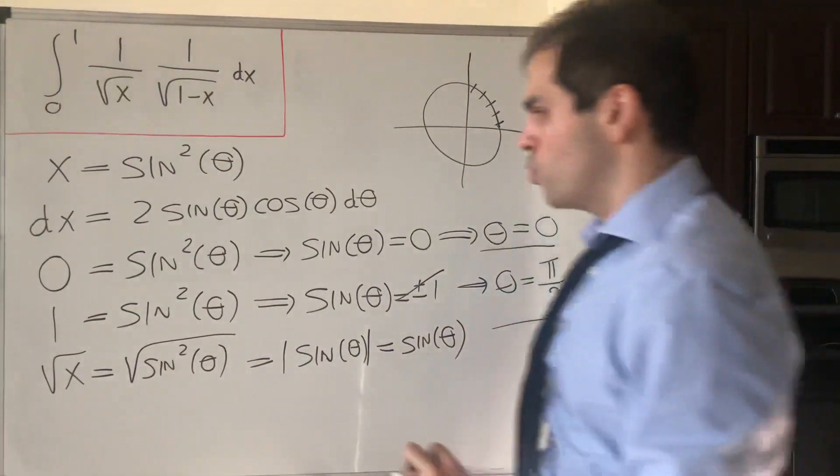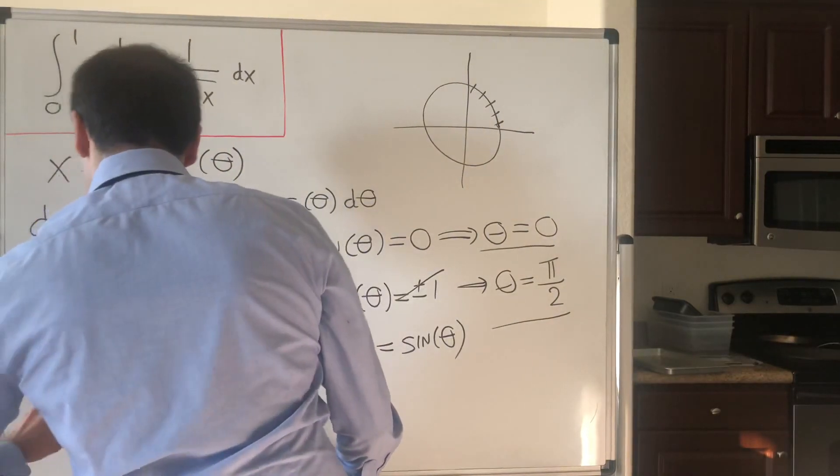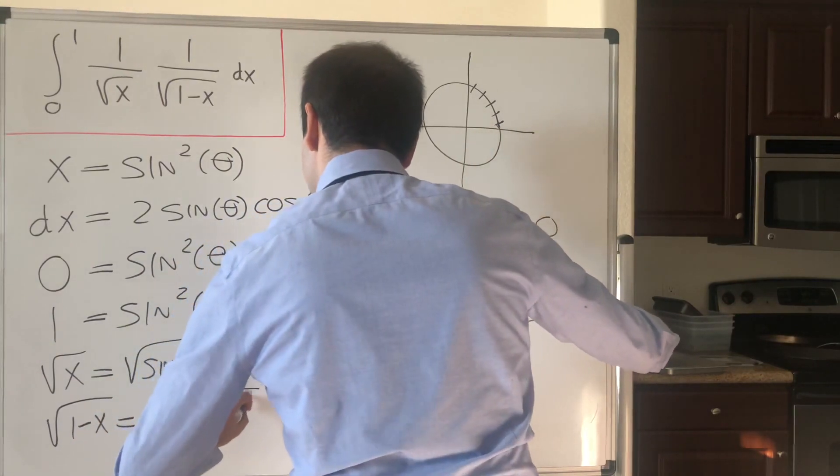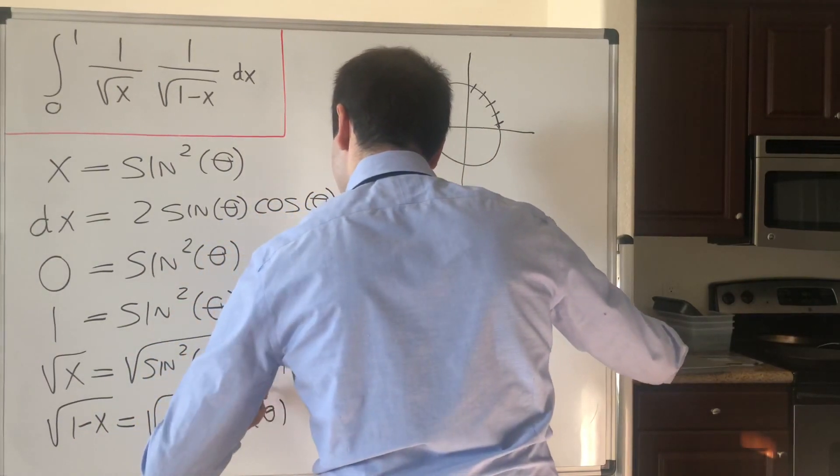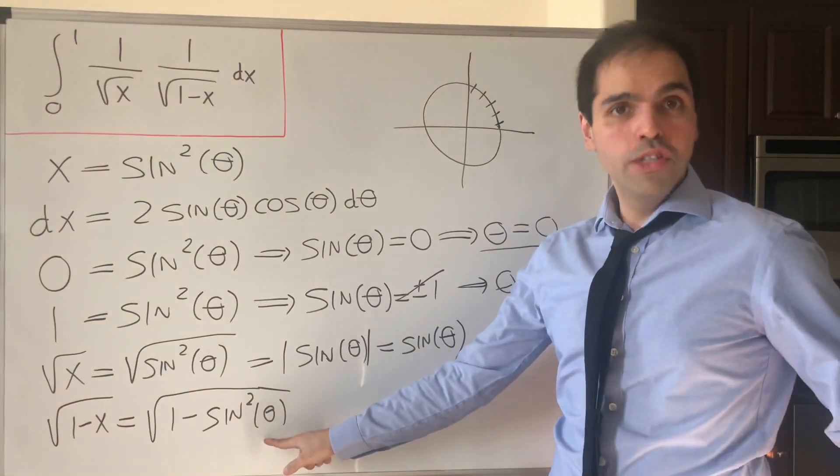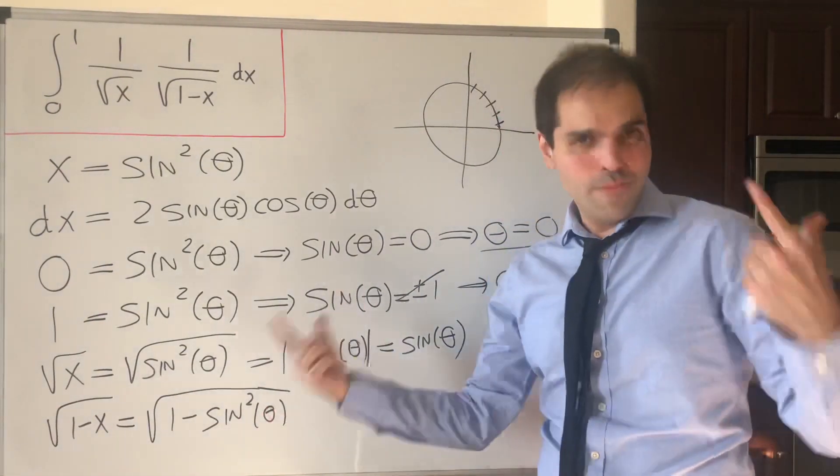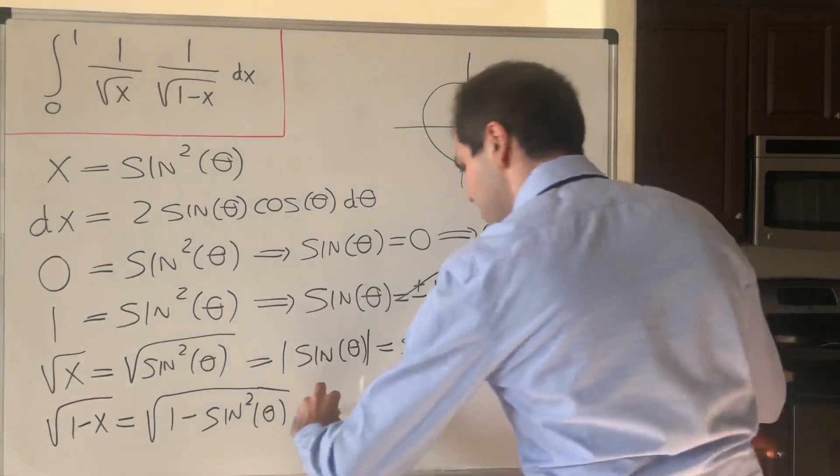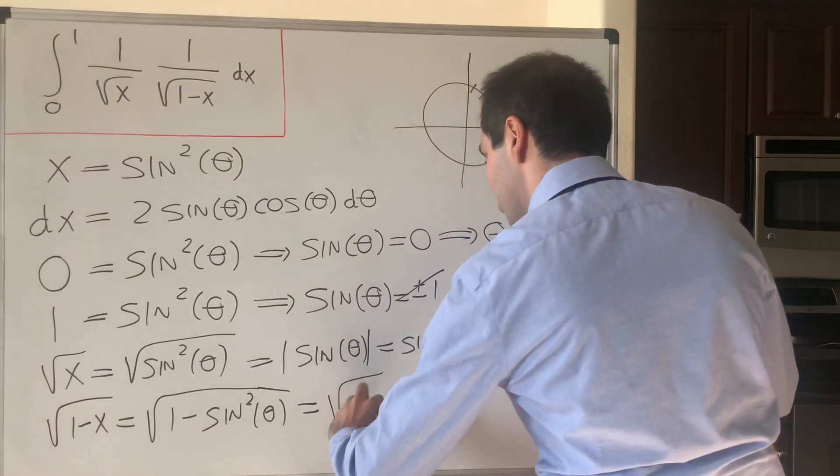And what about square root of 1 minus x? Well, that becomes square root of 1 minus sine squared of x, and that's what makes it beautiful, because this simplifies. So this just becomes square root of cosine squared theta.